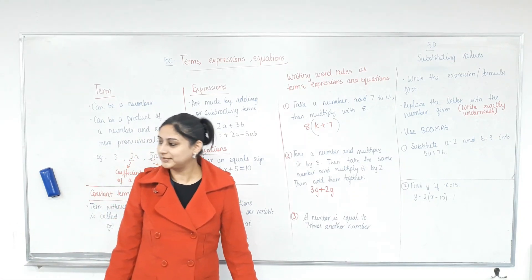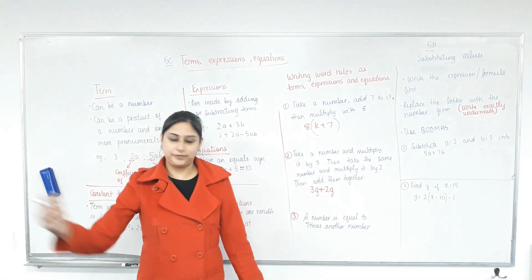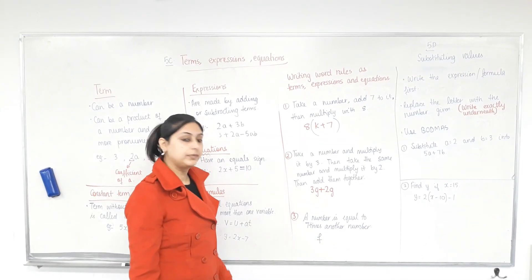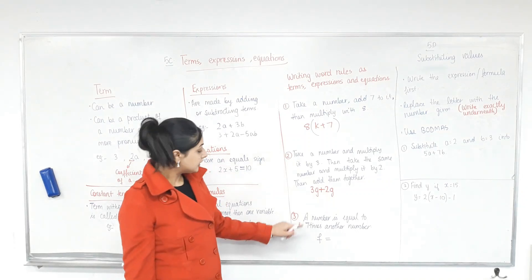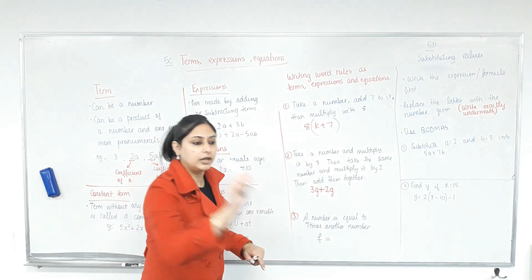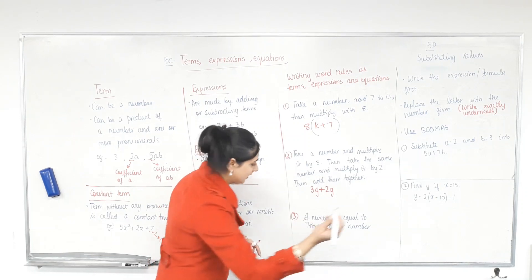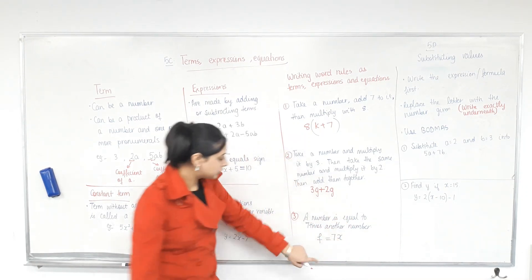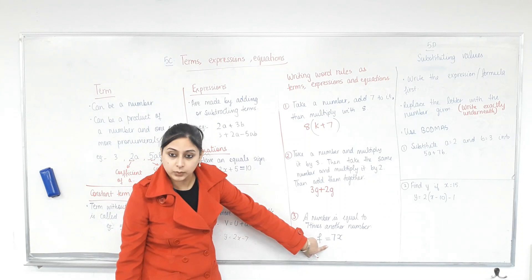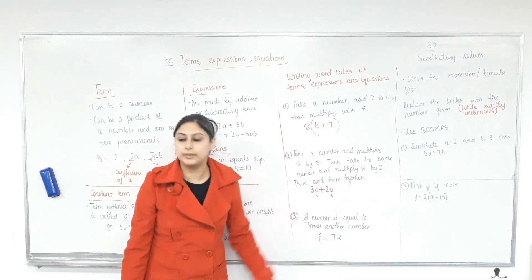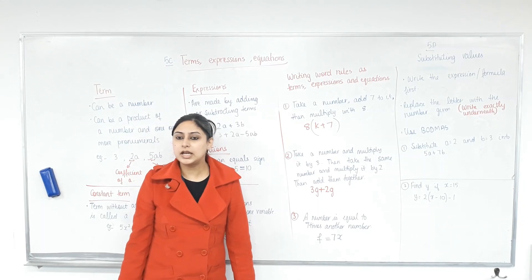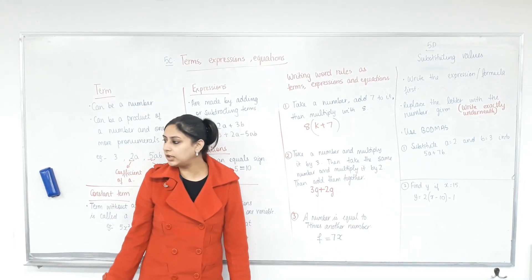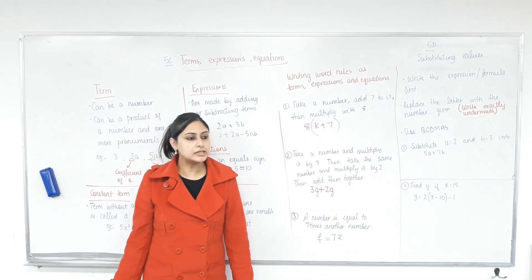A number F is equal to seven times another number X. So we write: F equals 7X. Is that an expression? No — does it have an equal sign? Yes. Is it an equation then? Yes.